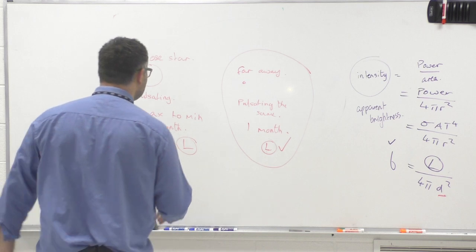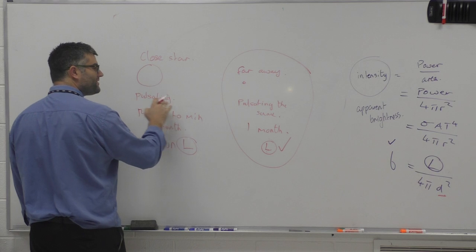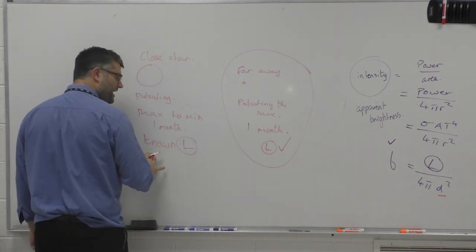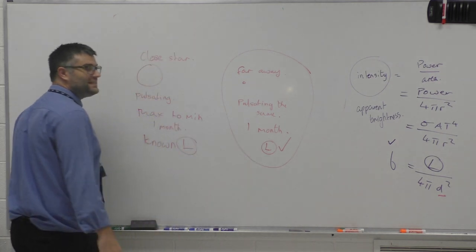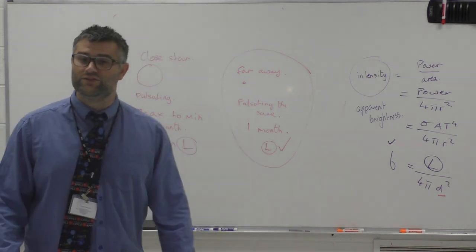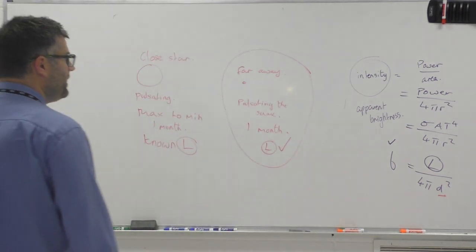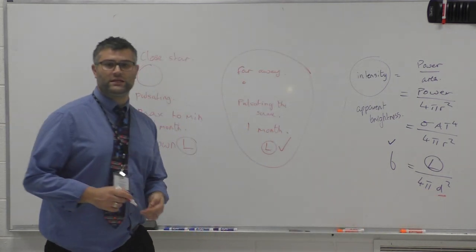And it's all due to the fact that we have a known close star that's pulsating the same as a faraway star. We know the luminosity of this, and that pulsation is a direct link to its luminosity. It tells you what the luminosity of the star is, and that was a really useful observation to have made in astronomy. So we can actually now distance the star using this method.